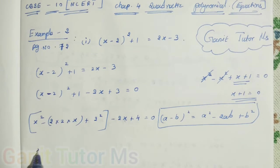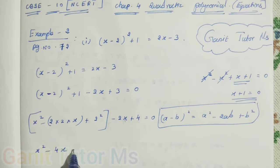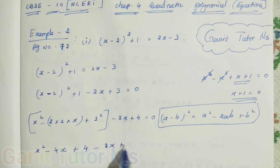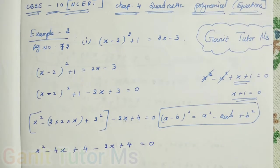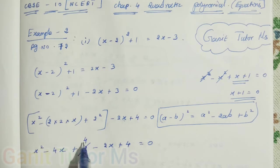Now, you can solve this. x squared minus 2 into 4 into x, 4x, plus 2 to the 4 minus 2x plus 4 equal to 0. You can see here, plus 4 here. Plus 4, right?